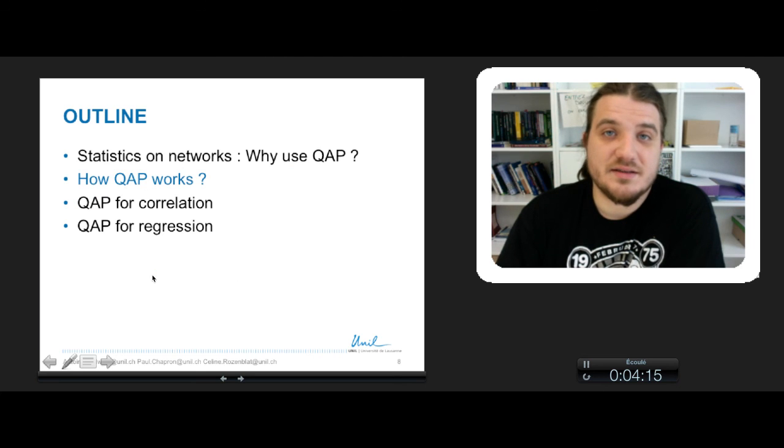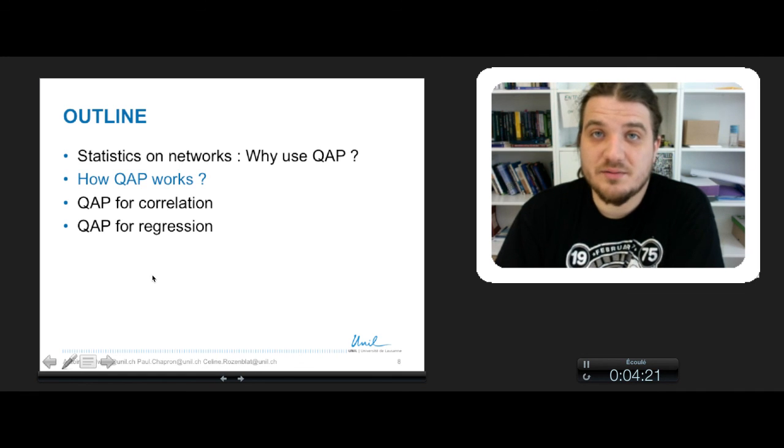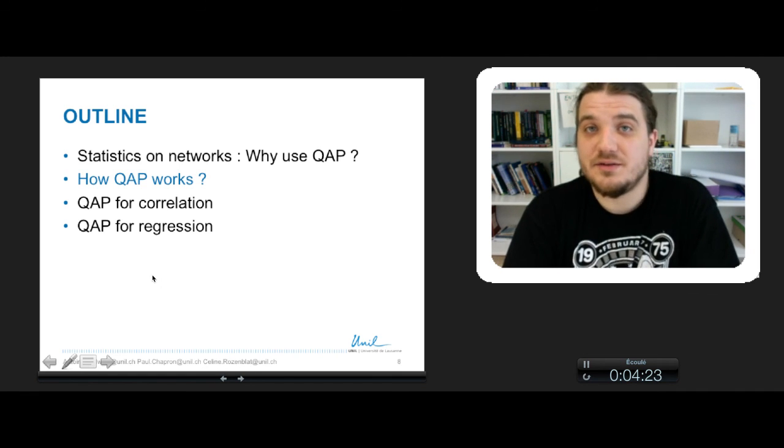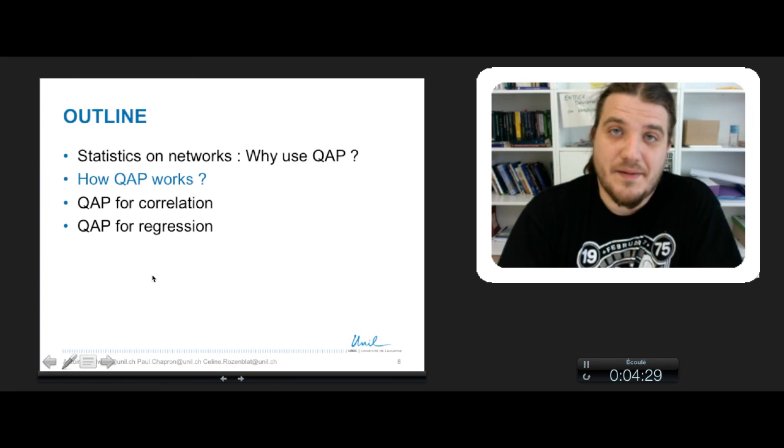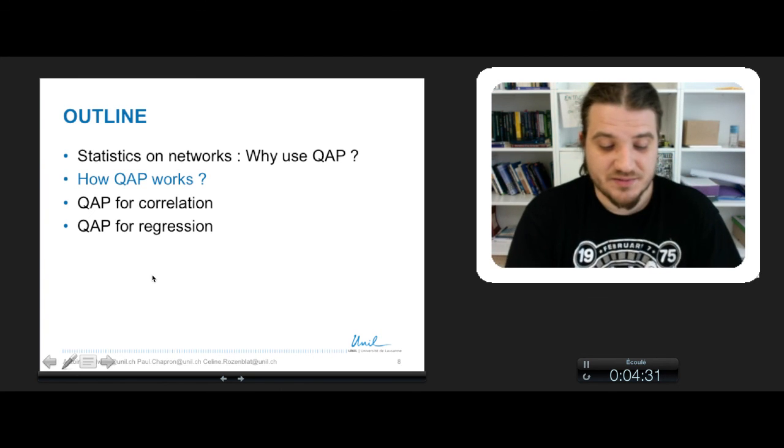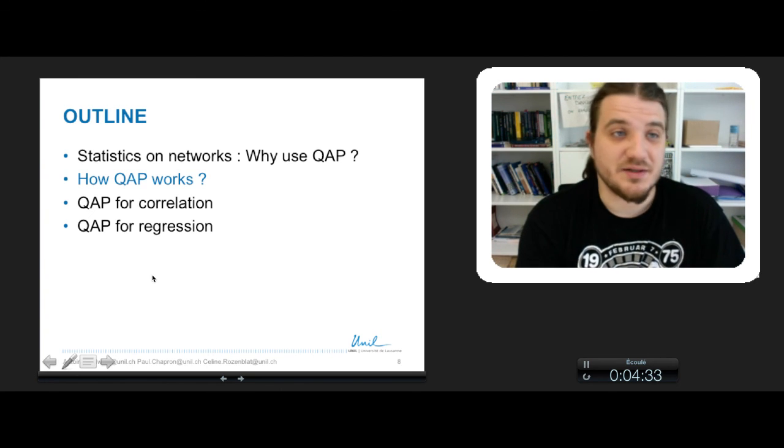So basically, that's it about QAP correlation tests and networks and statistics. So we will try to make some correlation, but because of the reason there is no independence of relation, we will have to use the QAP test to make as if we got independent observation. This is the end of the part one. Let's see how QAP works in part two.